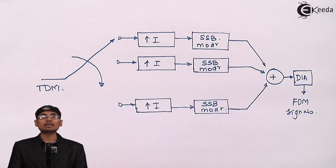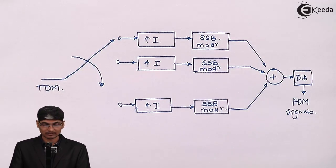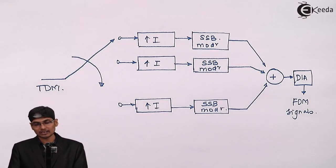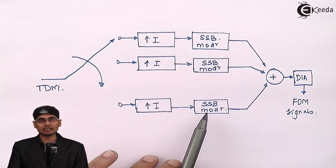What interpolator will do? Interpolator will increase the sampling rate by a factor of, here also let us take an example of 12 because we are considering telephone channels. Then I will perform an SSB modulation at different carrier frequencies. Modulator 1, modulator 2 and modulator N will have different carrier frequencies.